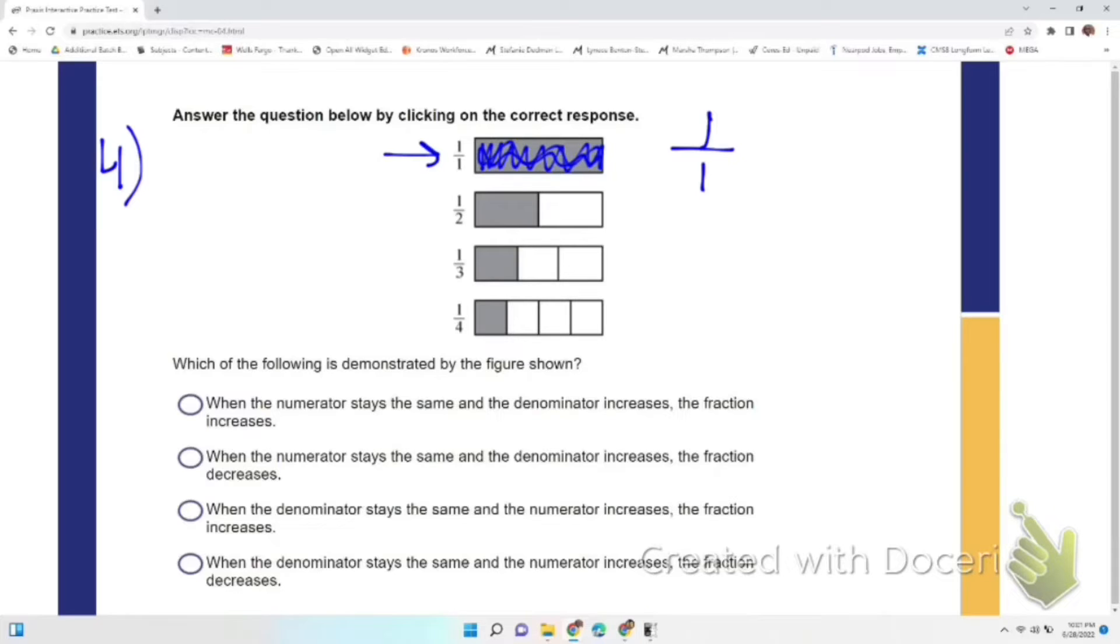We look and see that on each of these fractions, the numerator stays the same and the denominator is bigger. The denominator grows, right? The numerator stays the same and the denominator becomes bigger. It becomes two, becomes three, becomes four. So the numerator stays the same.